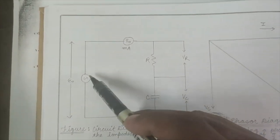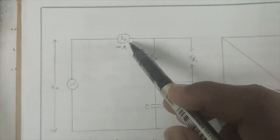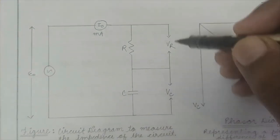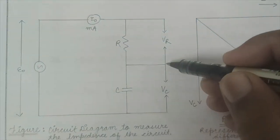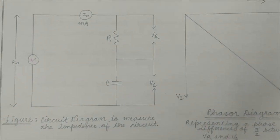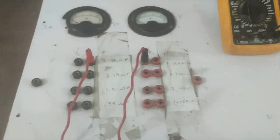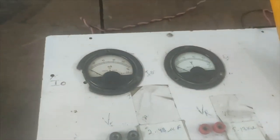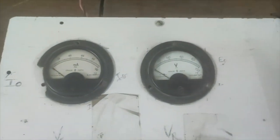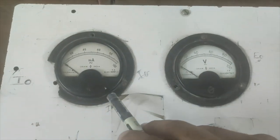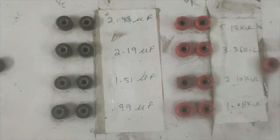The circuit uses a step down transformer from which we measure E₀ and I₀. The milliammeter measures I₀. We also need to find VR, the voltage across the resistance, and VC, the voltage across the capacitor. The voltmeter reads V₀ and the milliammeter reads I₀ from the circuit box.